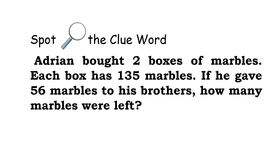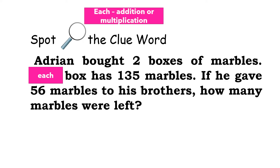Spot the clue word. Adrian bought two boxes of marbles. Each box has 135 marbles. If he gave 56 marbles to his brothers, how many marbles were left? The clue word 'each' tells us addition or multiplication. First, we need to add two 135s, or multiply 2 times 135, because Adrian bought two boxes and each box has 135 marbles — we need to find how many marbles there are in all.